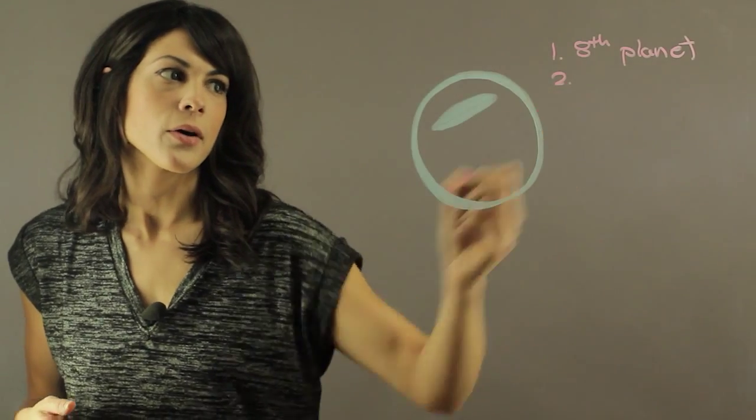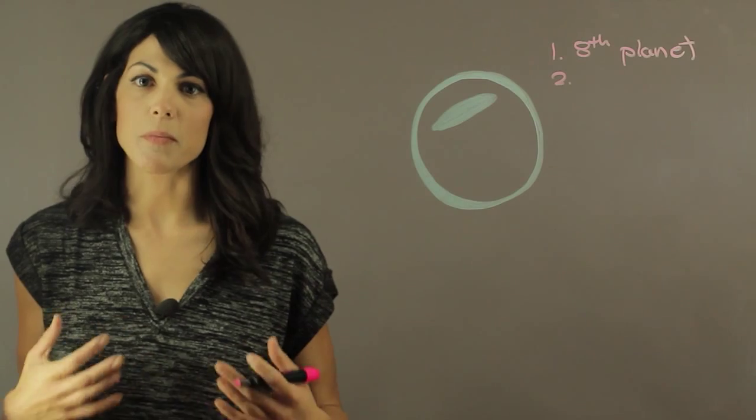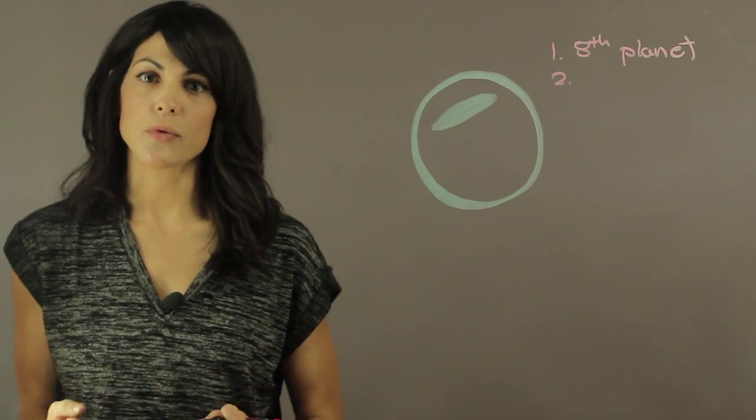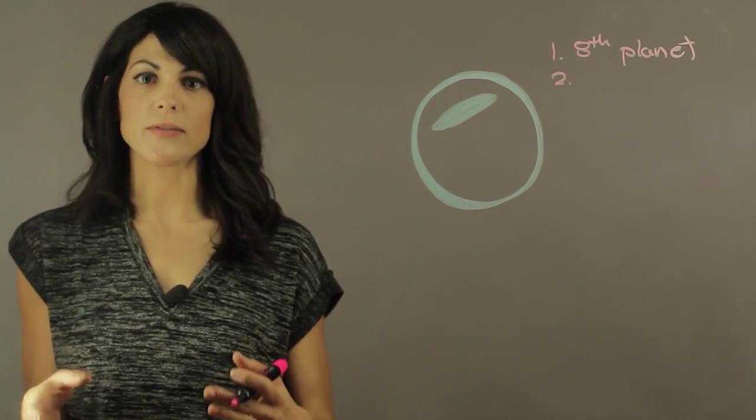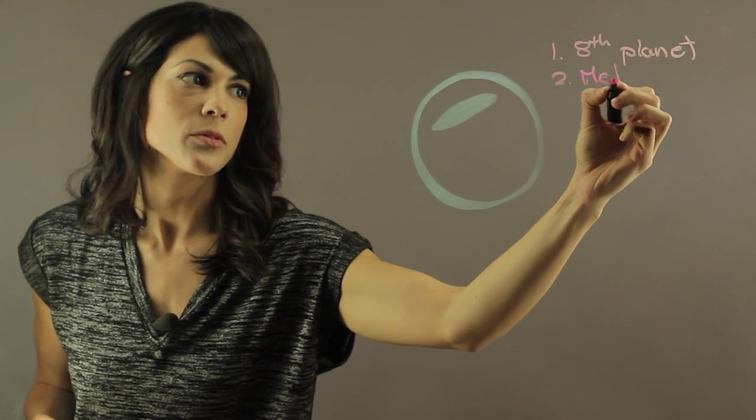The second important thing about Neptune is that it's blue. It's a blue planet, and this has to do with methane. Methane tends to absorb the red wavelengths and reflect the blue wavelengths, therefore the planet looks blue. So it has a methane atmosphere.